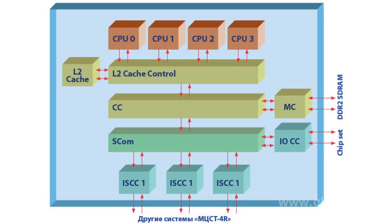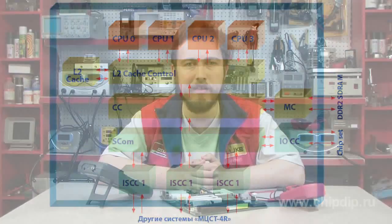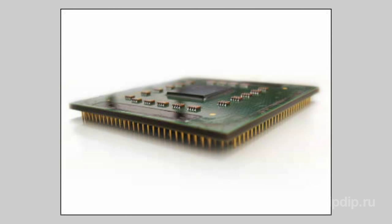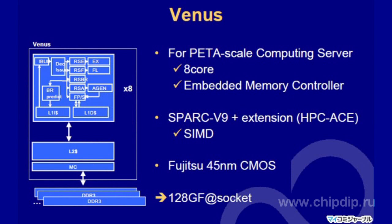An MCST 4R processor has a frequency of 1 GHz at a power consumption of no more than 10 watts, with up to 23 simultaneous operations. As of June 2009, a Fujitsu laboratory's processor Venus SPARC 64-8FX could handle up to 128 billion floating-point operations per second. Thus, the open source SPARC technology allows creating computer systems with world-class computing speed.